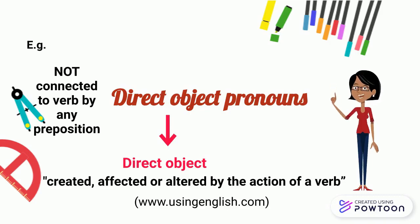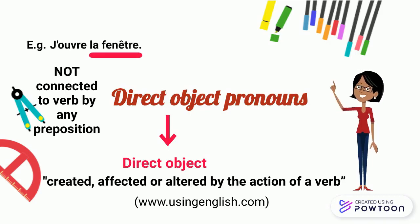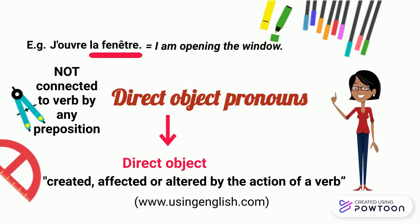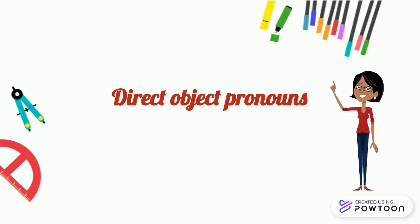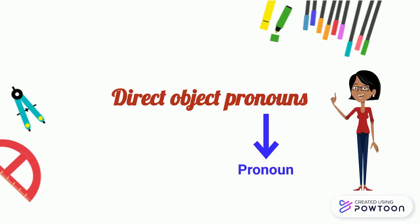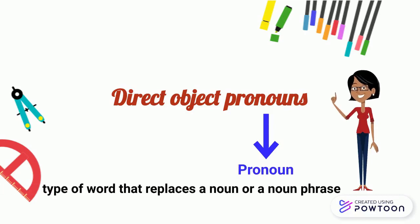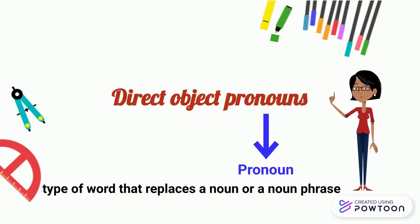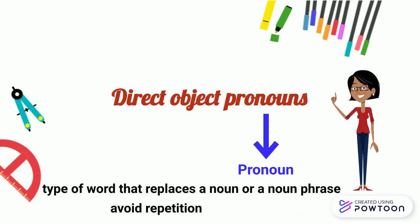For instance, j'ouvre la fenêtre — I'm opening the window. And finally we have pronoun. It is a type of word that replaces a noun or a noun phrase. It is used mainly to avoid repetition.